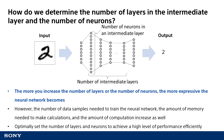Basically, the more you increase either the number of these layers or the number of neurons, the more you increase the power of expression of this neural network. In other words, this makes it possible to solve more difficult problems or achieve a higher level of performance.